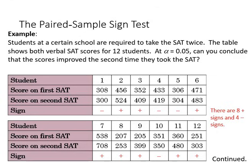Here's an example of the paired sample sign test. We have students at a school who have to take the SAT two times. The table shows both verbal SAT scores for 12 students, and the alpha level we're going to be working with is 0.05, so the question is can we conclude that the scores improved the second time they took the SAT? Perhaps they had a training course, and we're now evaluating whether or not that was effective.